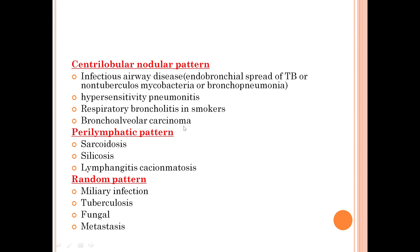In a perilymphatic pattern, nodules are distributed along the subpleural regions, fissures, and lymphatic routes — the diagnosis could be sarcoidosis, silicosis, coal workers' pneumoconiosis, or lymphangitic carcinomatosis. In random distribution, nodules can be seen anywhere, and the first diagnoses that come to mind are miliary infection such as tuberculosis or fungal infection, and metastasis — particularly from thyroid carcinoma, renal cell carcinoma, melanoma, choriocarcinoma, and breast carcinoma.